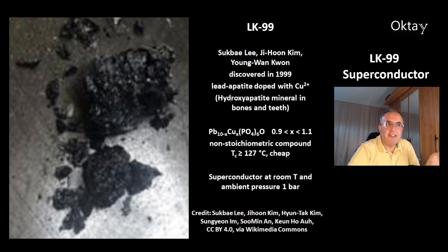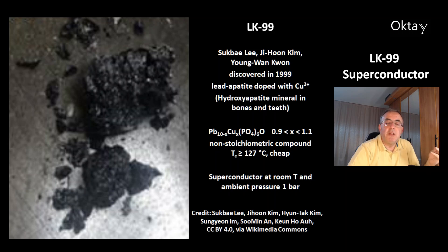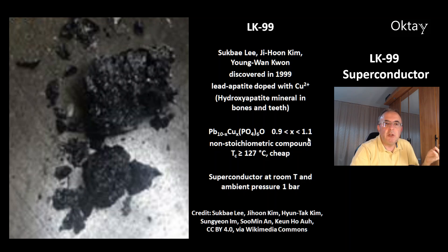This is a lead apatite doped with copper ions. There is a big group of compounds called apatites. One of these compounds is hydroxyapatite, which is the inorganic compound in bones and teeth. This is the formula of LK-99: lead-copper-phosphate oxide. X is very important — it has to be between 0.9 to 1.1, which means about 10% of the lead ions are replaced by copper ions. This is a non-stoichiometric compound.